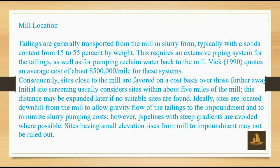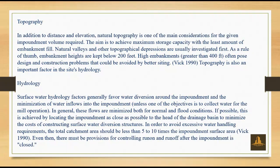Tailings are generally transported from the mill in slurry form, typically with a solids content from 15 to 55 percent by weight, requiring an extensive piping system. The average cost for these systems is approximately $500,000 per mile; consequently, sites close to the mill are favored on a cost basis. Initial site screening usually considers sites within about five miles of the mill. Ideally, sites are located downhill from the mill to allow gravity flow of the tailings and to minimize slurry pumping costs.